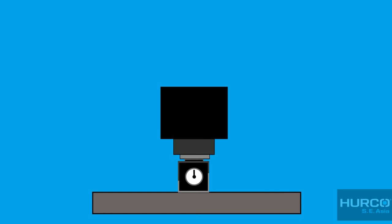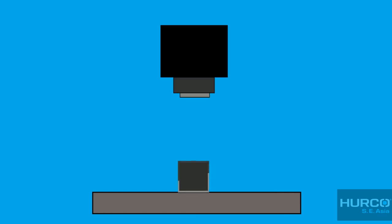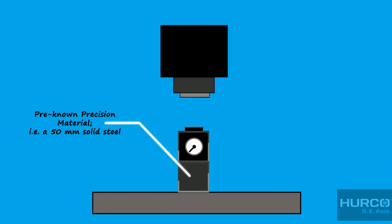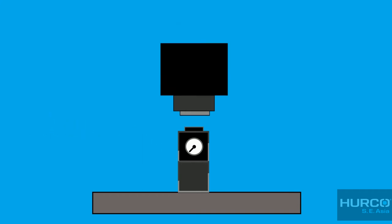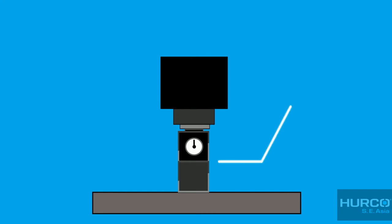In case you have a bigger Herco machine with longer Z-travel and bigger axis overtravel, you can use a pre-known precision material stacked up with the 50 mm height gauge. With the same procedure, move the spindle carefully down until it touches the height gauge surface, indicates 0, and store the position. Subtract with gauge's height and the precision material's height, followed by Enter.